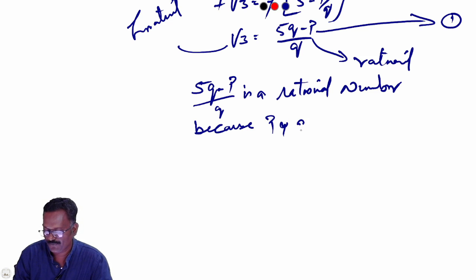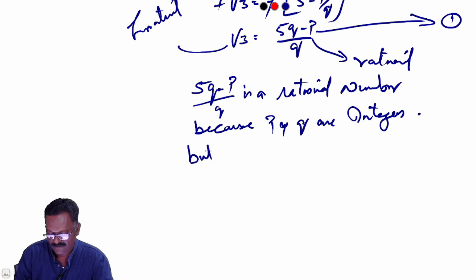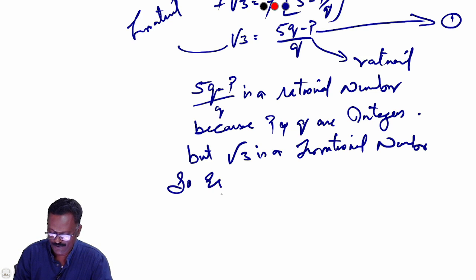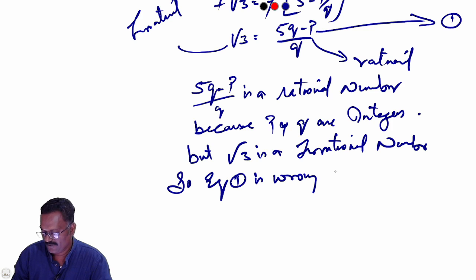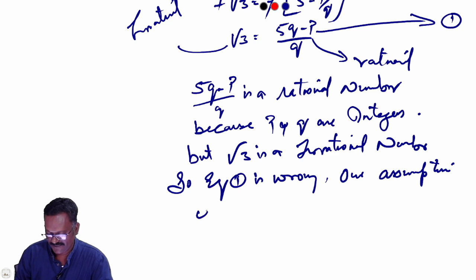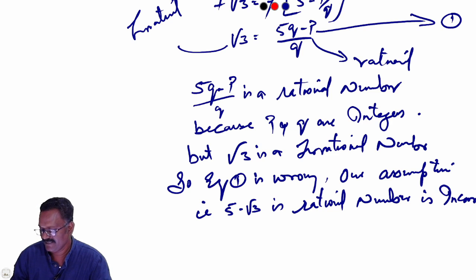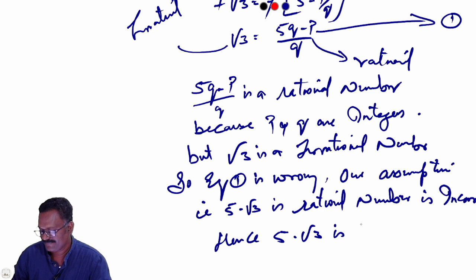Because P and Q are integers, but root 3 is an irrational number. So equation 1 is wrong. Our assumption that 5 minus root 3 is a rational number is incorrect. Hence, 5 minus root 3 is irrational.